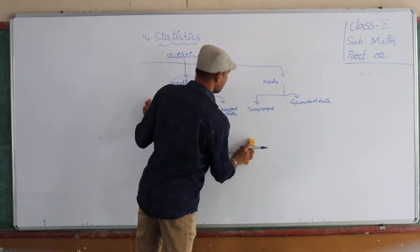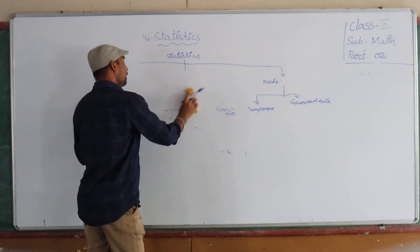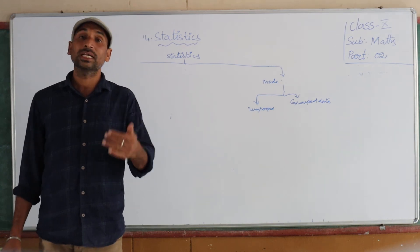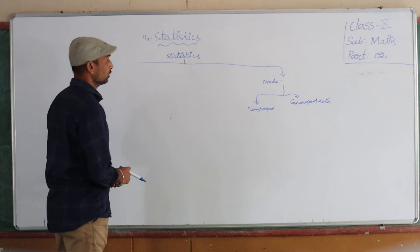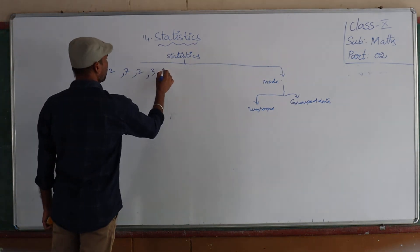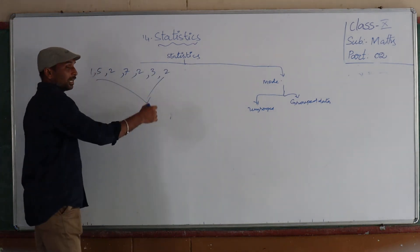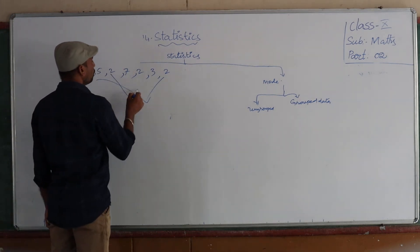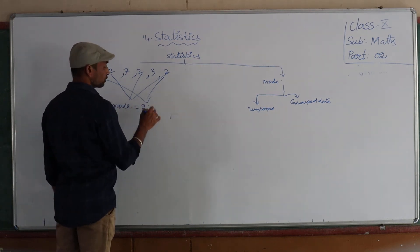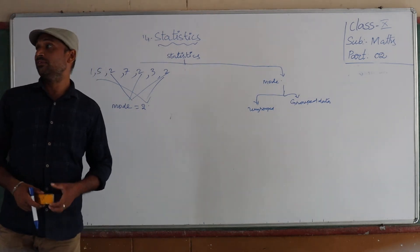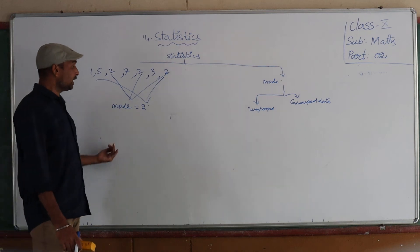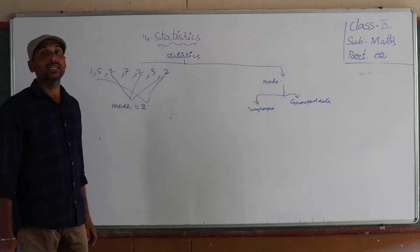The next topic is mode. Mode is the most frequently repeating value in the given data. For example, from the data 1, 5, 2, 7, 2, 3, 2, 5 — the value 2 repeats 3 times, so mode = 2. Sometimes we get only one mode, sometimes two or three, and sometimes even more.